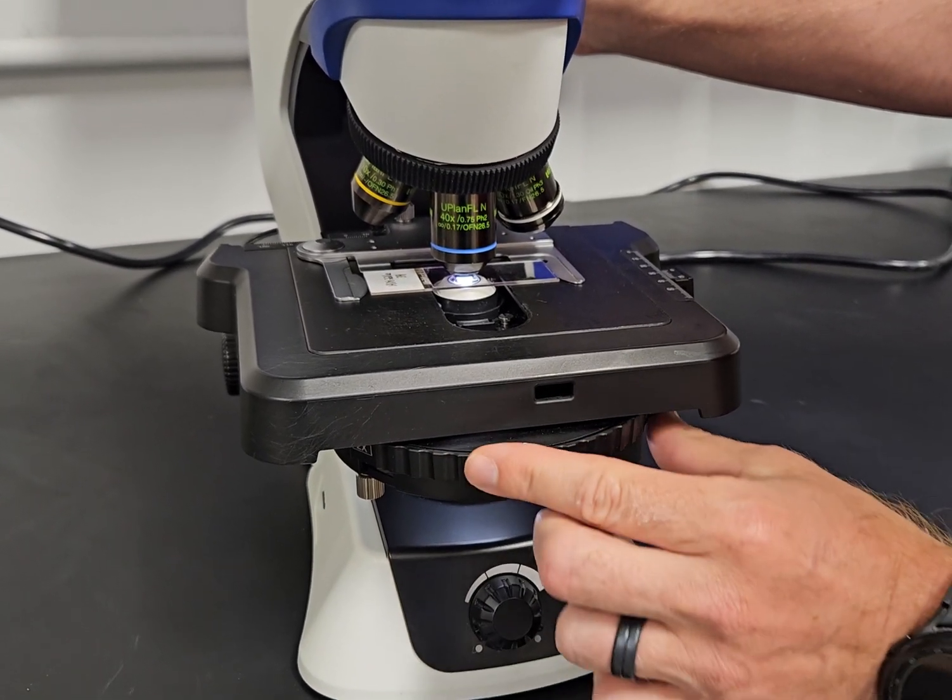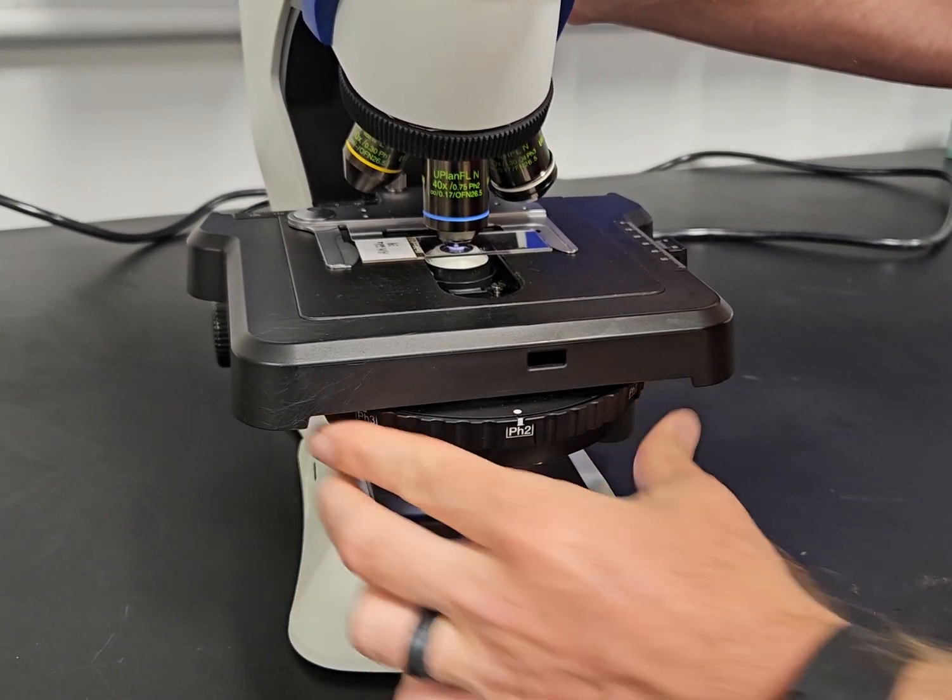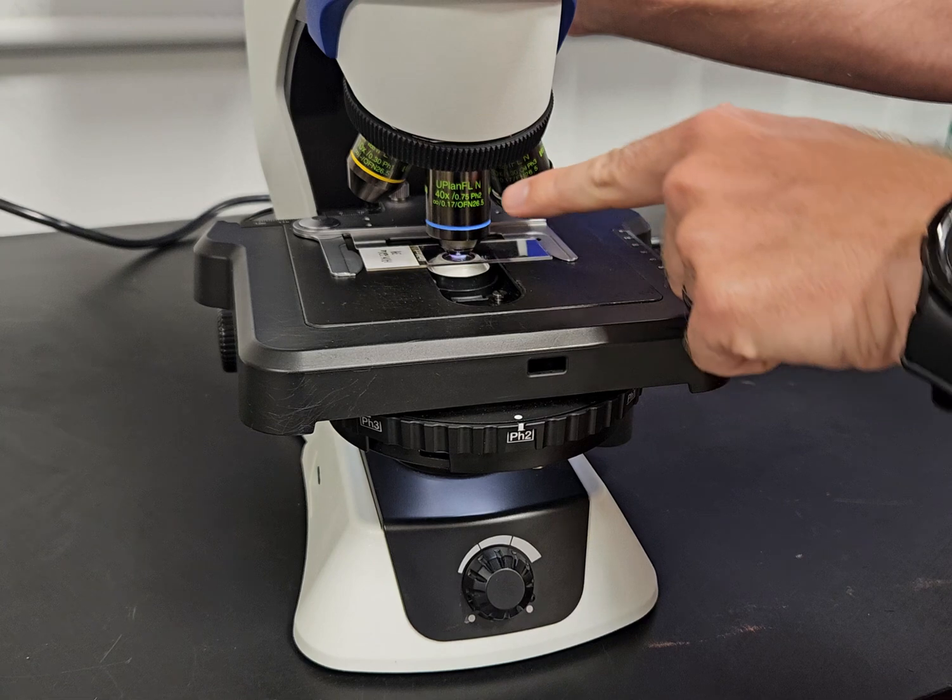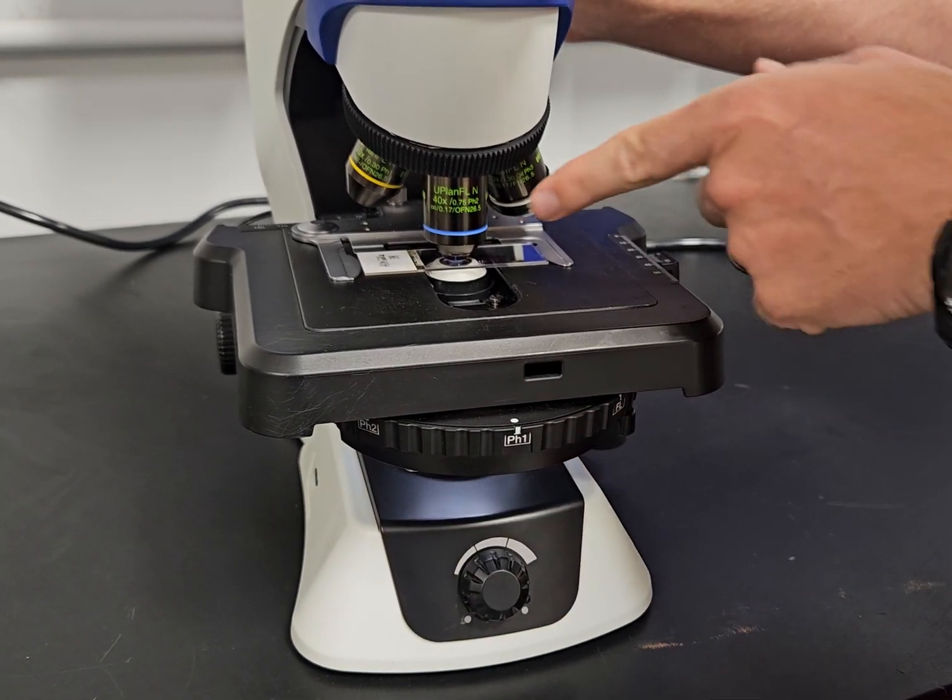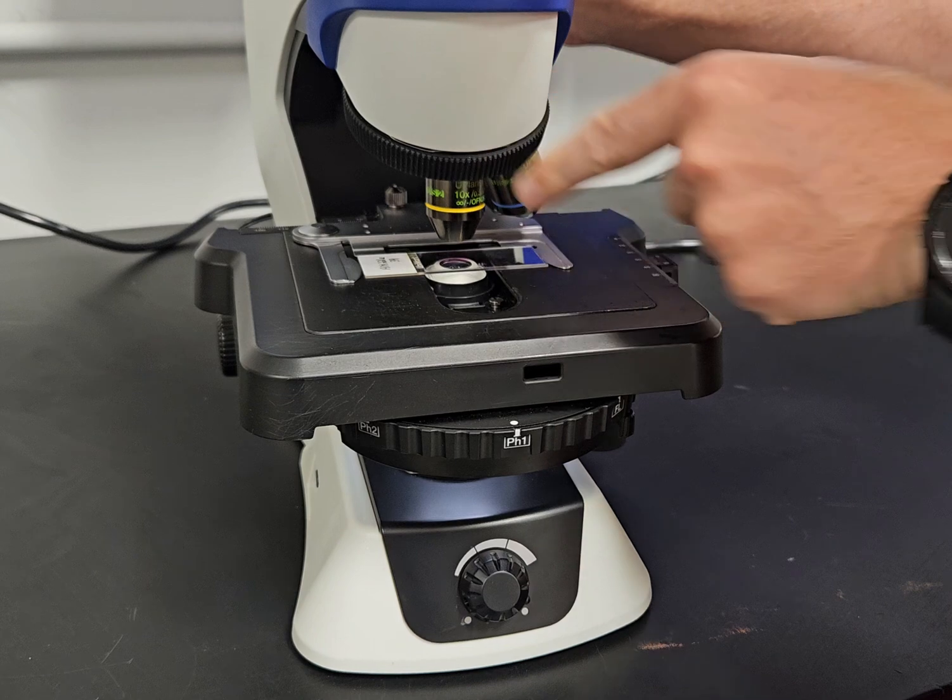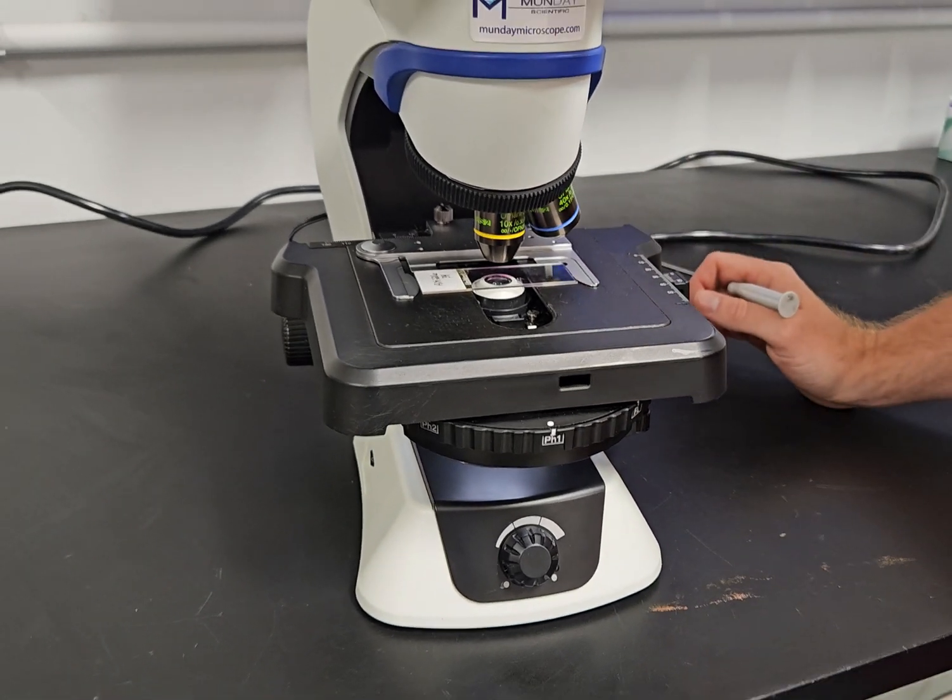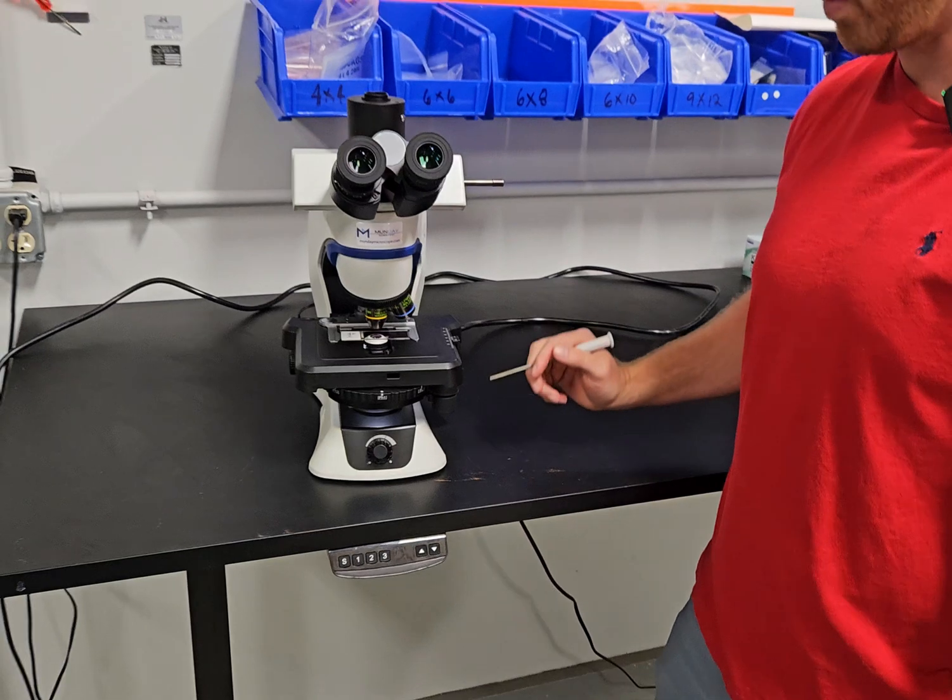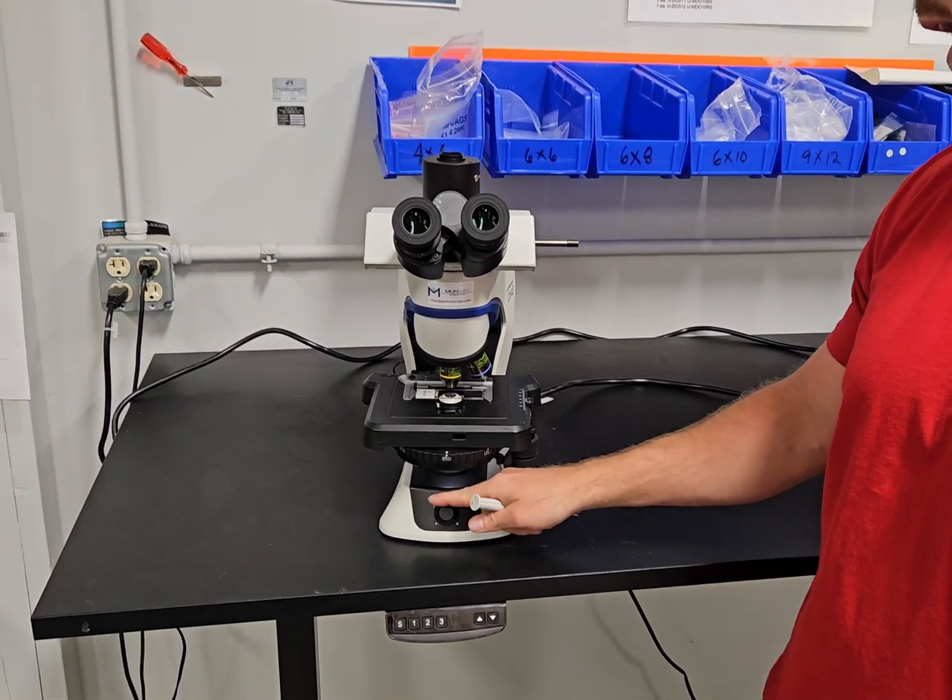You have a dark field stop, a phase three which will correspond to the 100x, a phase two pH two which will correspond to the 40x, and a phase one which will correspond to the 10x. We have made sure the phase rings are aligned on this scope, and then we have a rheostat right here which is how you control the light intensity.